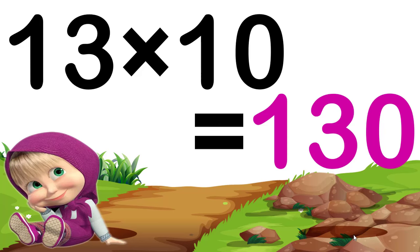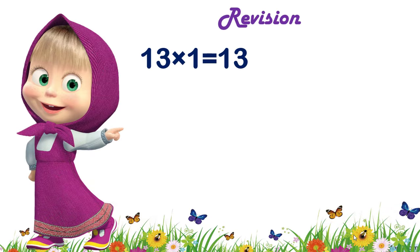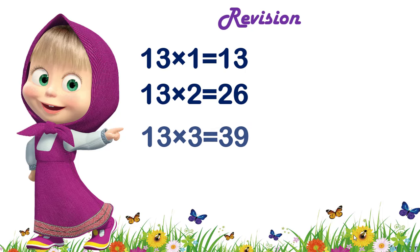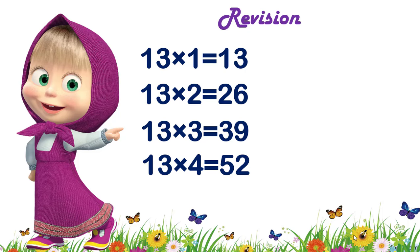Now children, let's revise the table quickly. Thirteen ones are thirteen. Thirteen twos are twenty-six. Thirteen threes are thirty-nine. Thirteen fours are fifty-two.